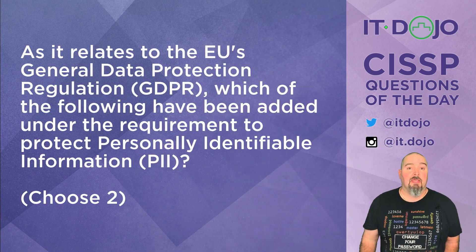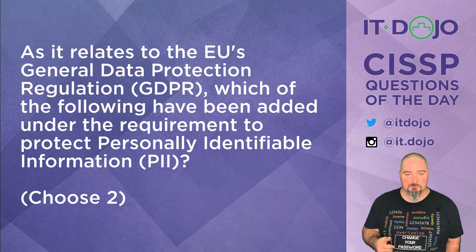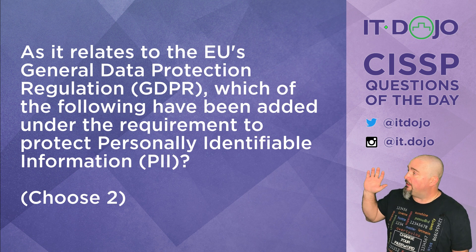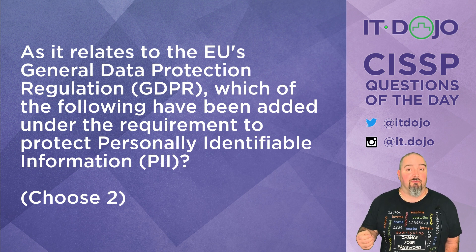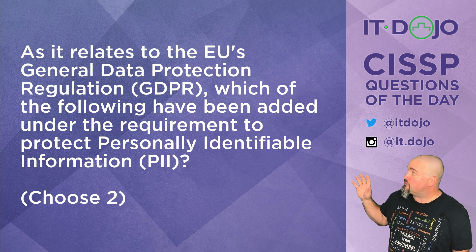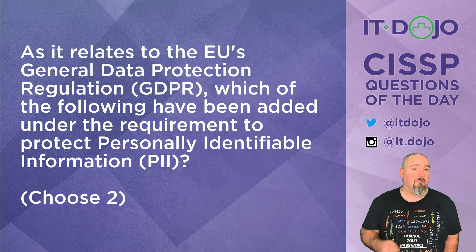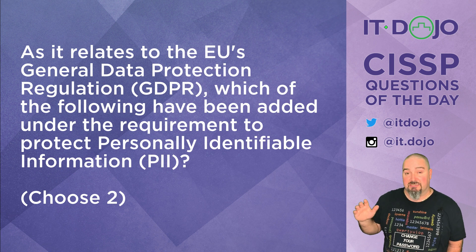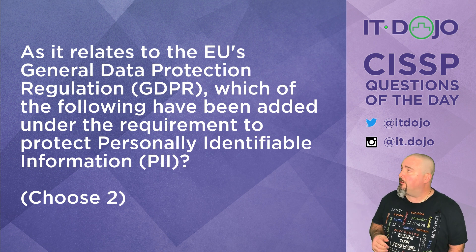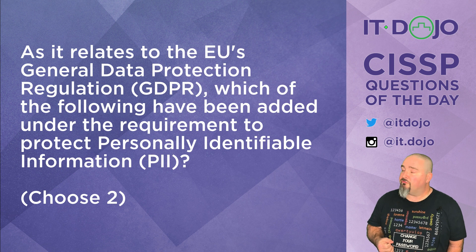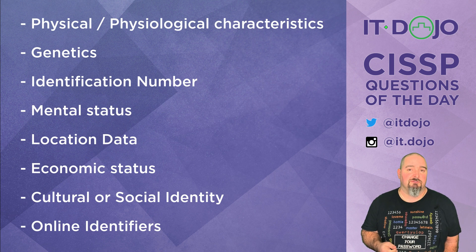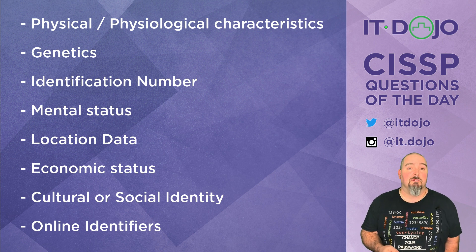As it relates to the European Union's General Data Protection Regulation, GDPR, which of the following have been added under the requirement to protect people's personally identifiable information or their personal data? I'm looking for two from the list that have been added and/or expanded upon, compared to what the old EU Privacy Directive actually had within it. Take a moment, click pause if you need to, give those a read, pick two of them.